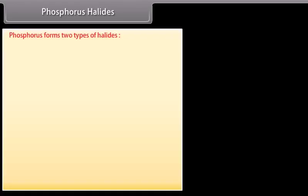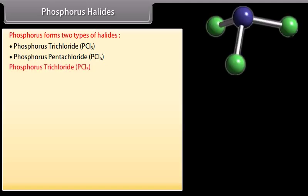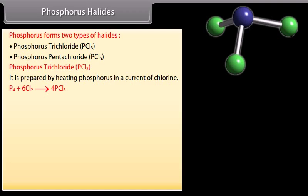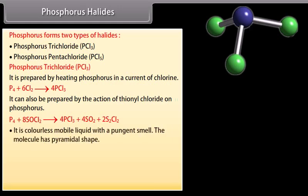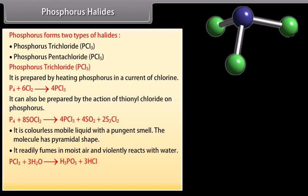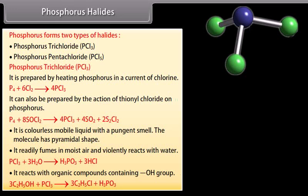Phosphorus forms two types of halides: phosphorus trichloride (PCl3) and phosphorus pentachloride (PCl5). PCl3 is prepared by heating phosphorus in a current of chlorine, or by the action of thionyl chloride on phosphorus. It is a colorless mobile liquid with a pungent smell and pyramidal molecular shape. It readily fumes in moist air, violently reacts with water, and reacts with organic compounds containing OH groups.